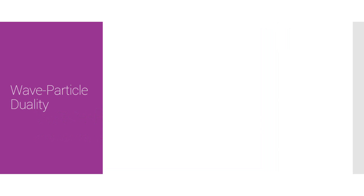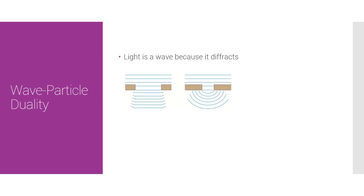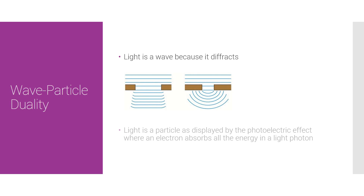Here's how we prove light has dual nature. On one hand, it's obviously a wave because it diffracts — as you can see here, it diffracts when it goes through a slit. However, we also know that it's a particle thanks to the photoelectric effect, as an electron absorbs all the energy in a light photon.